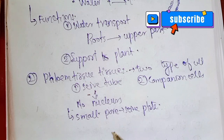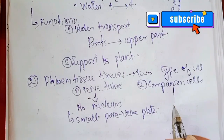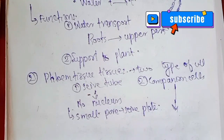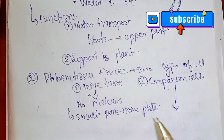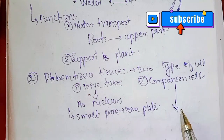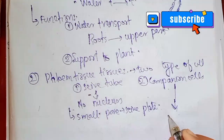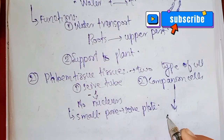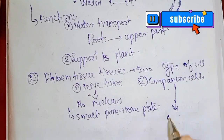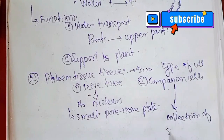The transport of food occurs through the cytoplasm of the sieve tube cells. Companion cells accompany the sieve tube cells and regulate the movement of food through the cytoplasm.